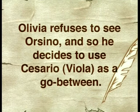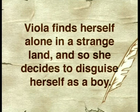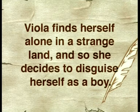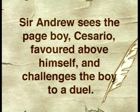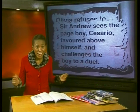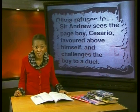Our third sentence tells us: Viola finds herself alone in a strange land and so she decides to disguise herself as a boy. And our final sentence: Sir Andrew sees the pageboy Caesareo favoured above himself and challenges the boy to a duel. Can we put these sentences in the correct order?